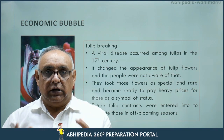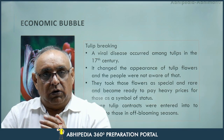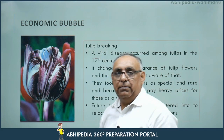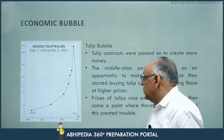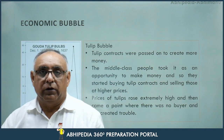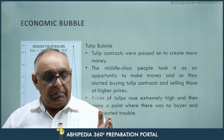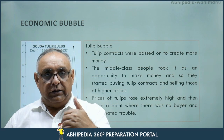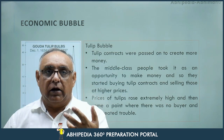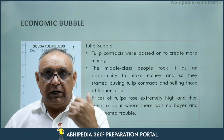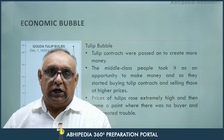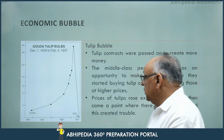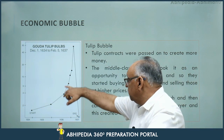People thought: let us make future contracts now, and when the off-blooming period comes, we will relocate them to our gardens. This caused demand to increase. Middle class people started further exchanging future contracts of tulips to earn profit — they started making money by buying tulip contracts and selling those at higher prices. Due to that, the prices of tulips rose very high — extremely high.